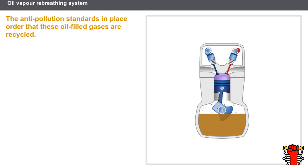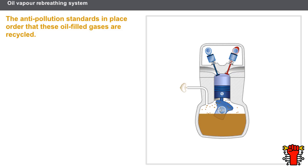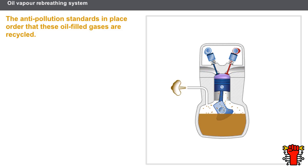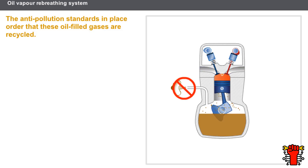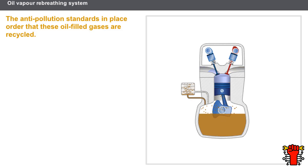During cylinder compression, gases pass through into the oil pan, where they mix with oil blended by the crankshaft. The oil vapour created increases the pressure in the oil pan and would otherwise escape into the atmosphere. Anti-pollution standards require that these oil-filled gases are recycled, and this is the function of the oil vapour rebreathing system.